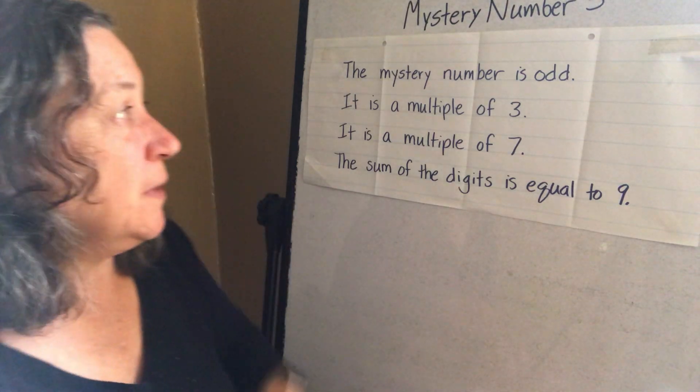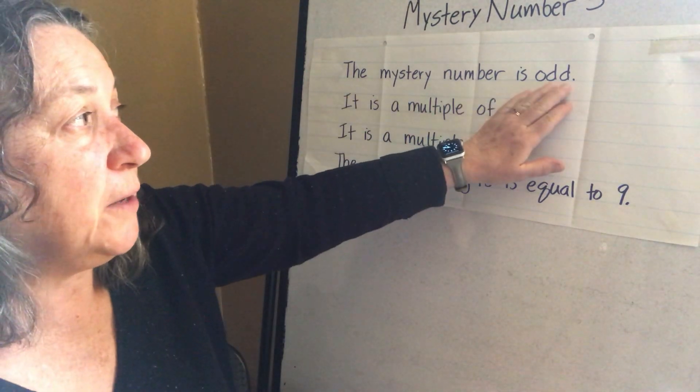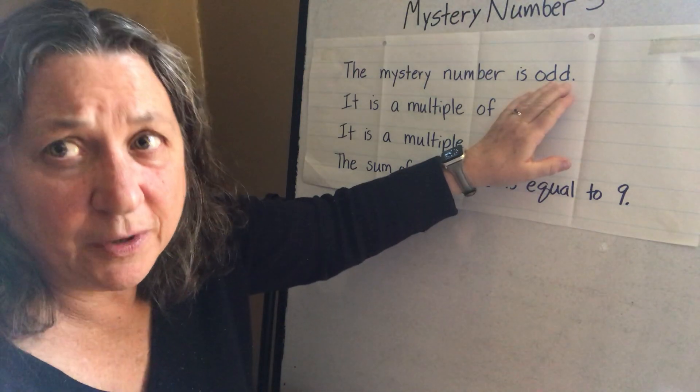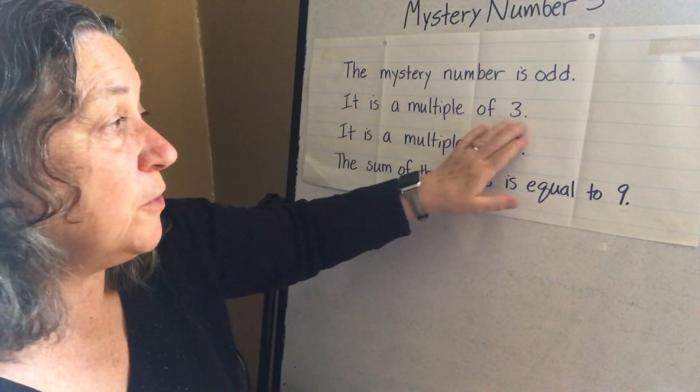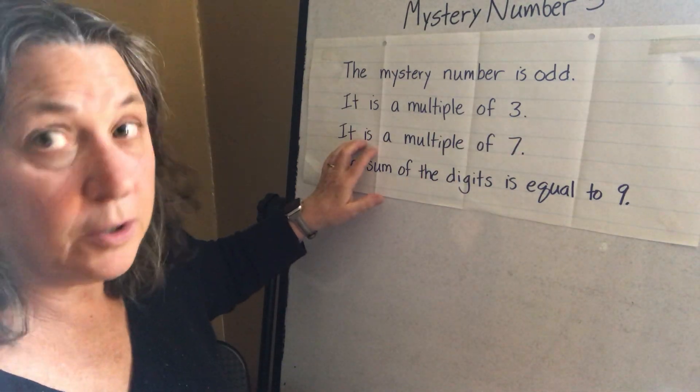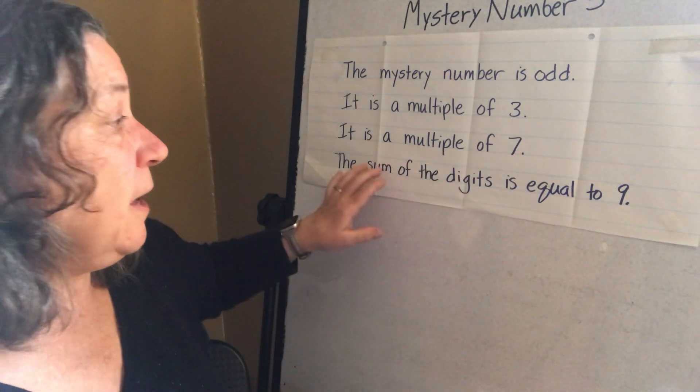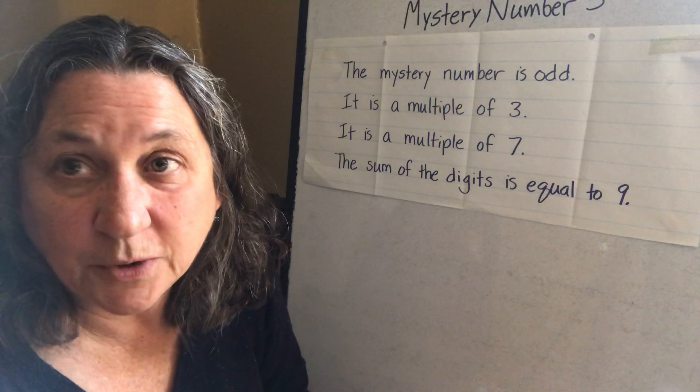Okay, here are the clues. The mystery number is odd. Those odd numbers go on forever so you probably won't write all of those. It is a multiple of three. It is also a multiple of seven and the sum of the digits is equal to nine.